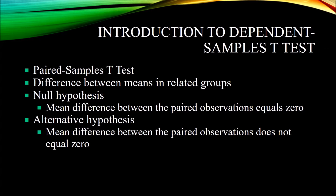The dependent samples t-test is also referred to as the paired samples t-test. This is a statistical method — it's an inferential statistic — that we use when we're comparing two related groups. It looks at the difference between means in related groups. The null hypothesis is that the mean difference between the paired observations equals zero, and the alternative hypothesis is that that mean difference does not equal zero.